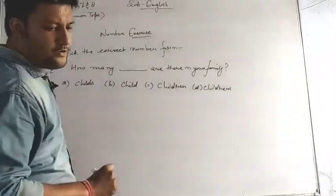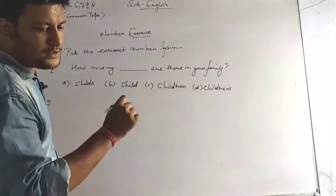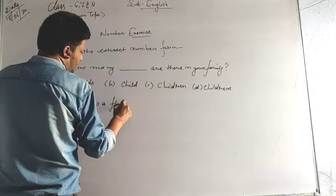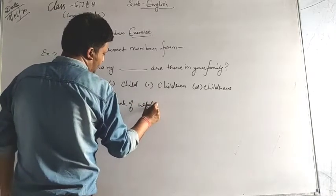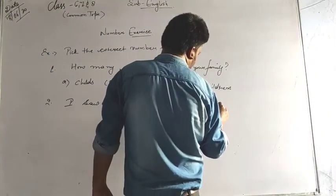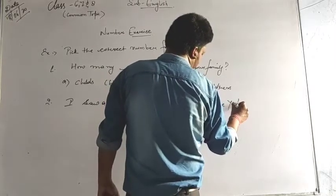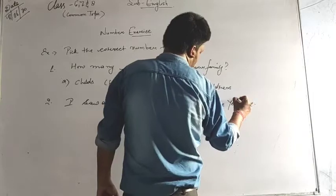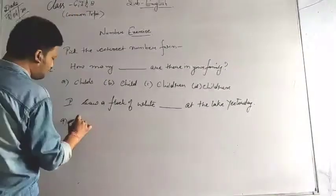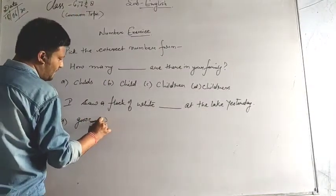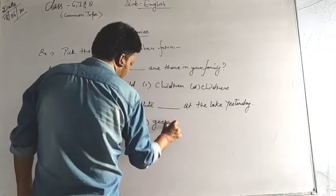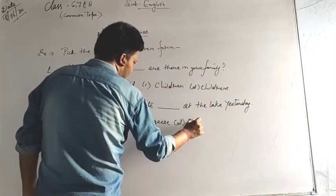Second question for you is I saw a flock of white dash at the lake yesterday. Option A for you is goose G-O-O-S-E, option B is G-O-O-S-E-S gooses, option C is G-E-E-S-E, and option D is G-E-E-S-E-S.